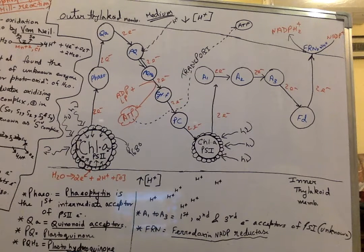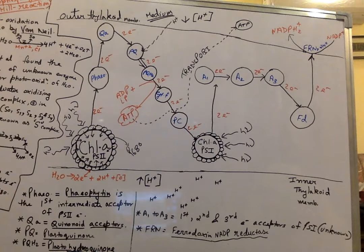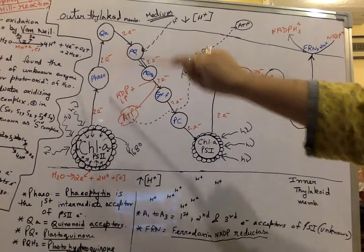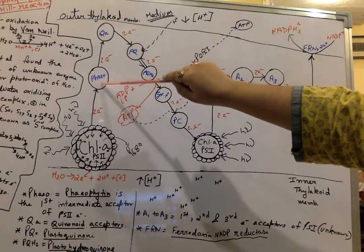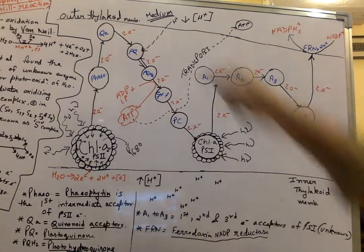Pheophytin is now reduced and having high electron potential, so it needs to release its electrons to some other intermediate having lower electron potential. The next electron acceptor is QA, which is basically the quinoid acceptor. QA has a low electron potential compared to Pheophytin, so electrons will move from Pheophytin to QA. Now Pheophytin is oxidized and QA is reduced.